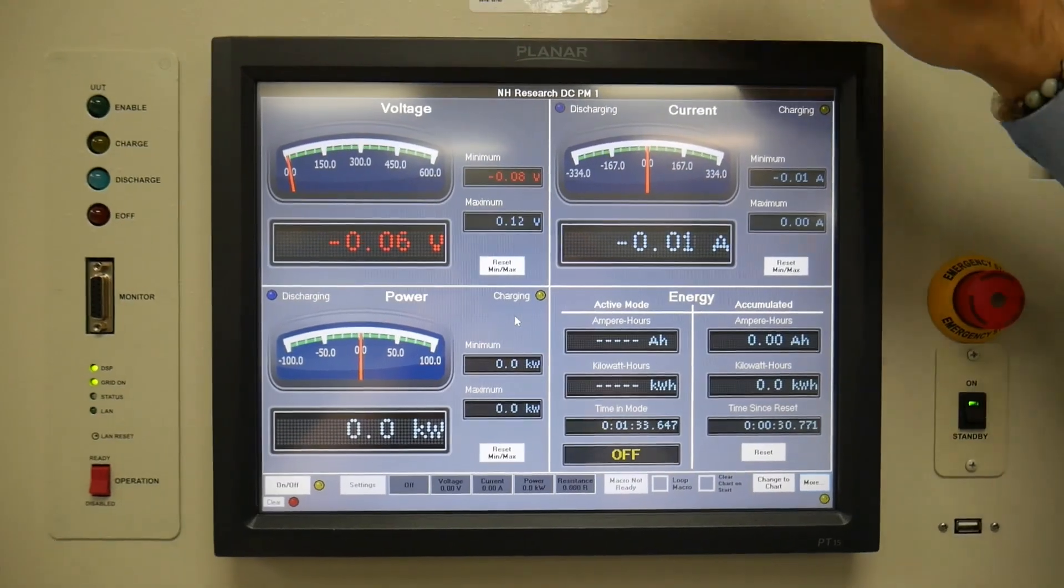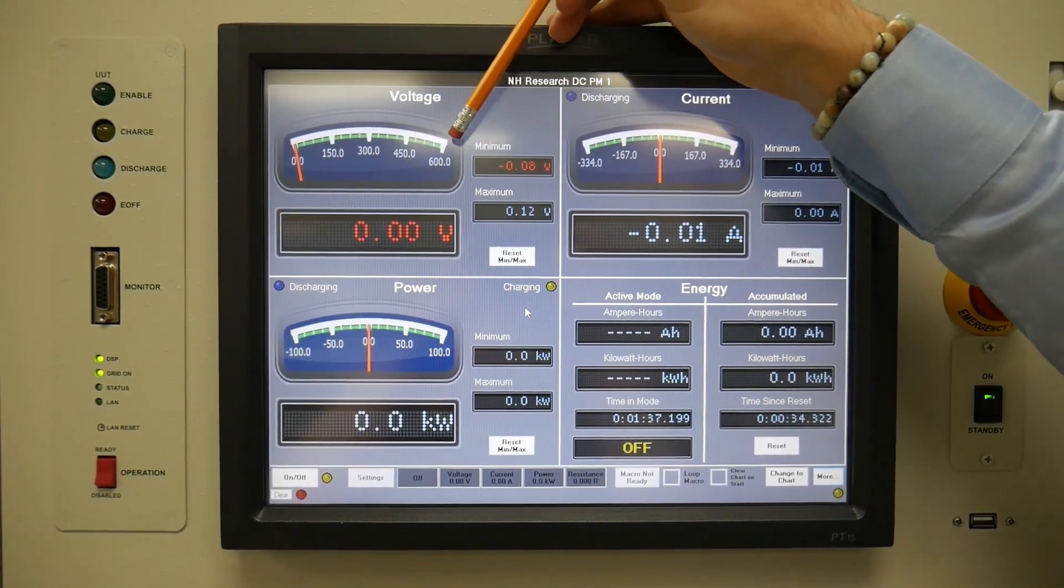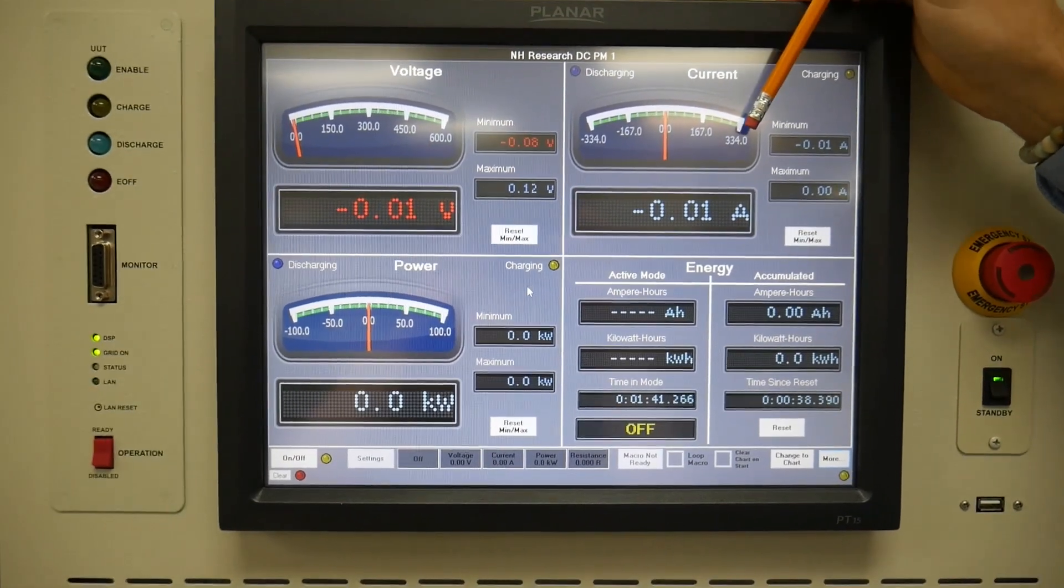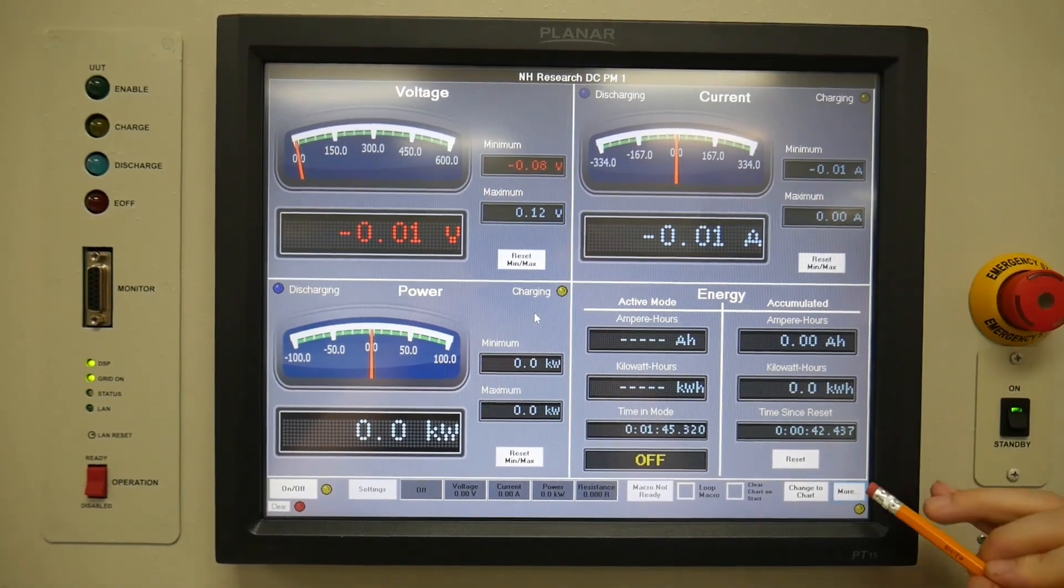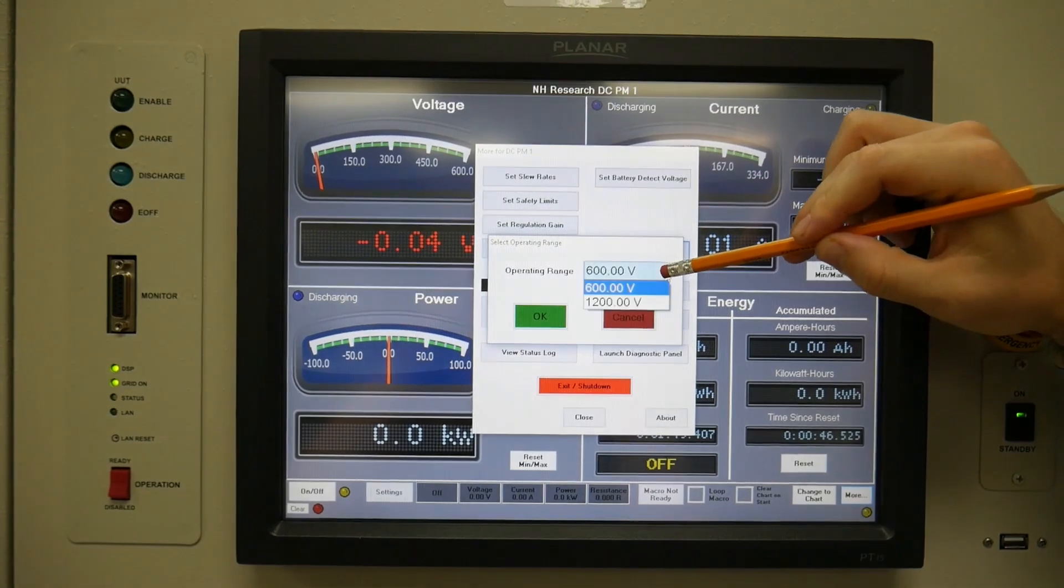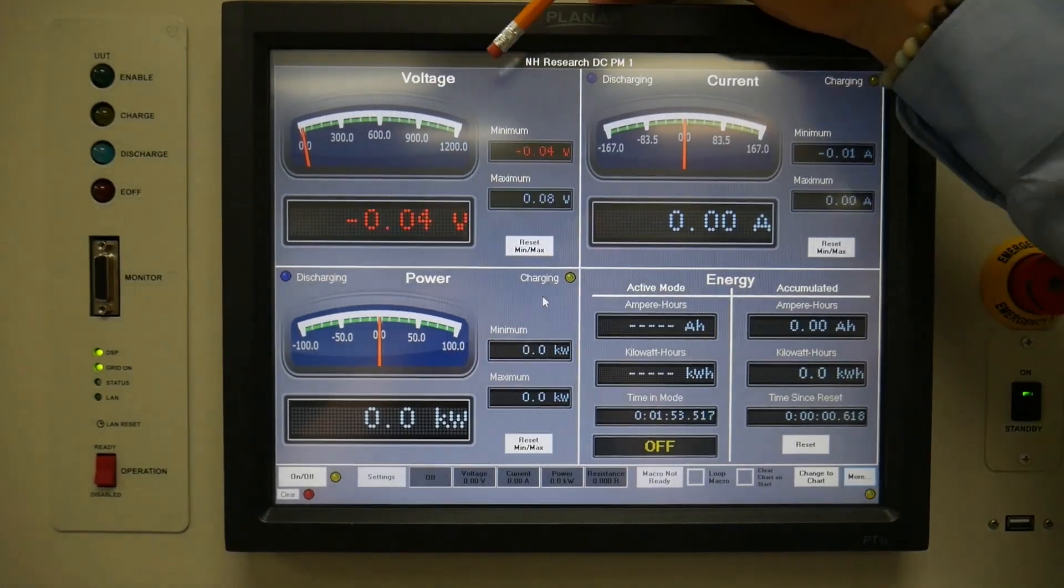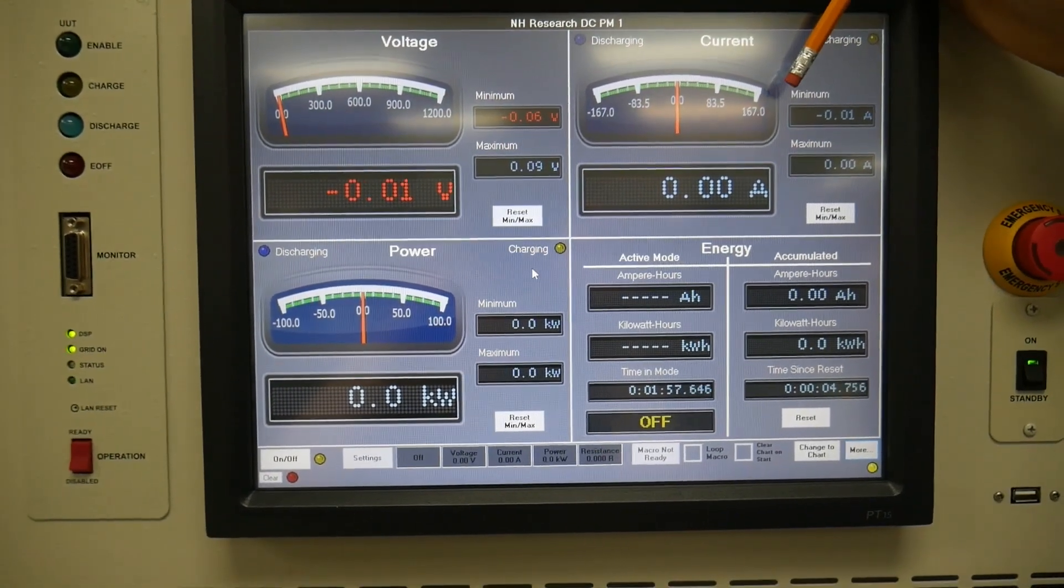So each cabinet is capable of 1,200 volts. Right here you see it only goes up to 600, but that's because your current can go up to 334 amps. To adjust that you can hit more, set operating range, and change your voltage to 1,200 volts. Hit OK. Now you have up to 1,200 volts and 167 amps.